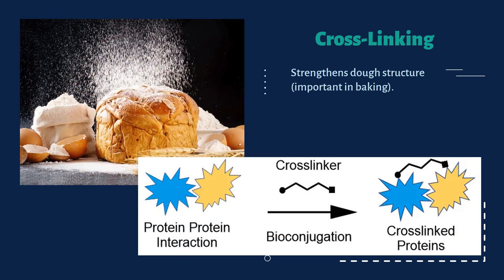Next is cross-linking, another important protein reaction. It helps gluten form in bread dough, giving it elasticity and chewiness. It strengthens the dough structure and is also used in the bakery industry, where protein-protein interactions form cross-linked proteins using cross-linkers. The best example of a cross-linker is gluten.